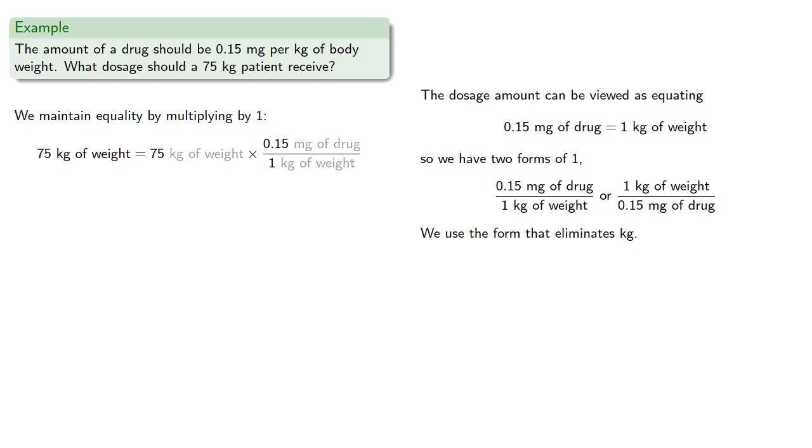Again, we'll ignore the units for a moment to find the numerical value. But we do need to put those units back. The important idea here is that our units are actually kg of body weight and mg of drug. These are the things we can remove as common factors whenever we see them. Simplifying our units gives us mg.